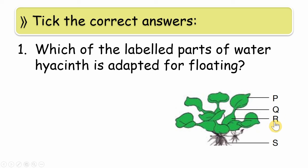They have deliberately not given the names of these parts. Let's look at the options: Q, P, S, R. So which part helps it to float? You can see here the root, here the leaf. Which part helps it? We need to figure this out.